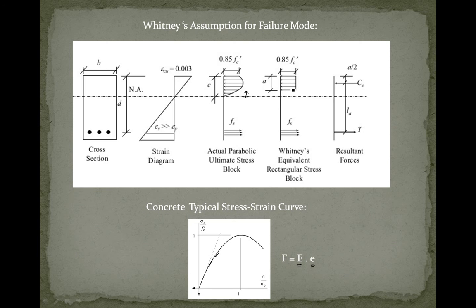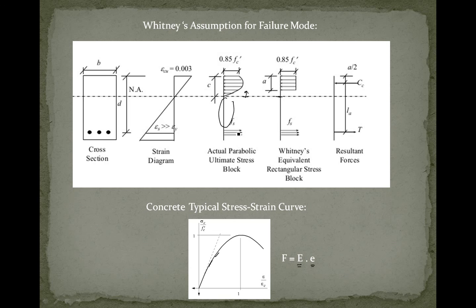To solve this complexity, we assume a compression block of uniform stress of 0.85 f'c acting at depth a, which is different than the neutral axis. The value 0.85 is an experimental value. Another assumption is that we neglect the tensile strength of concrete — we say that steel will carry the whole tension.